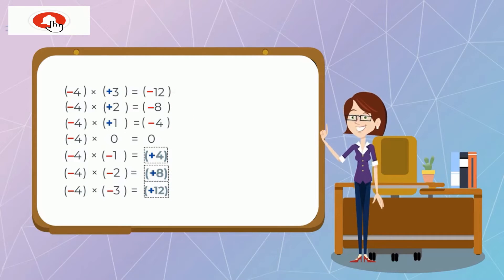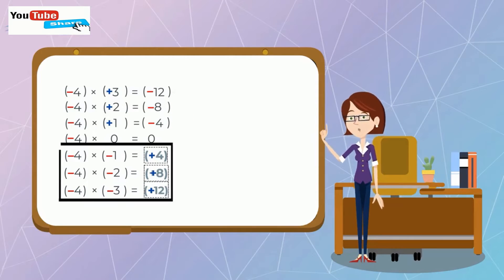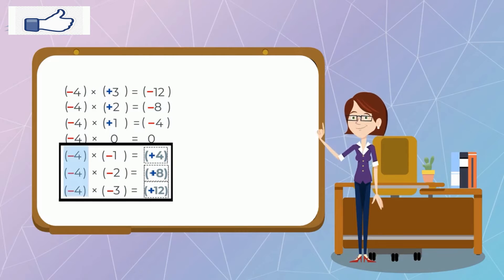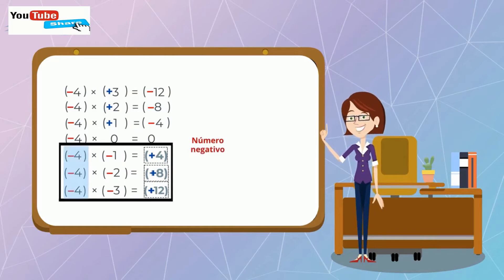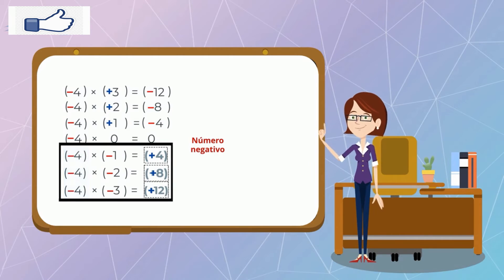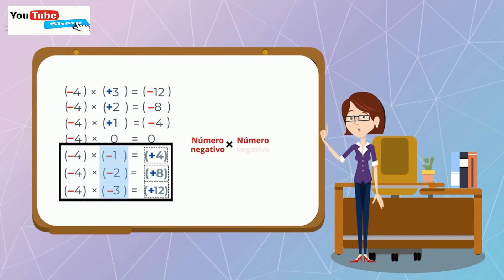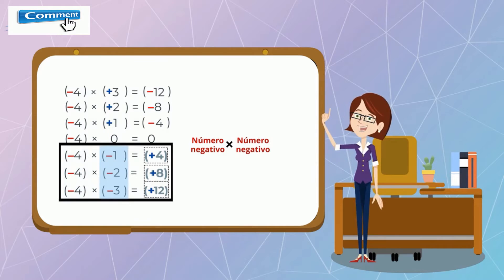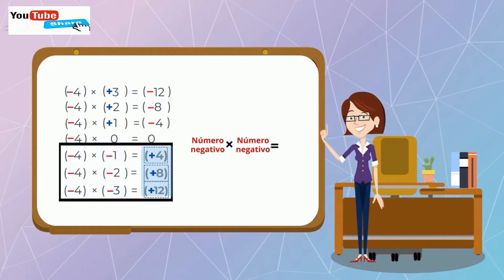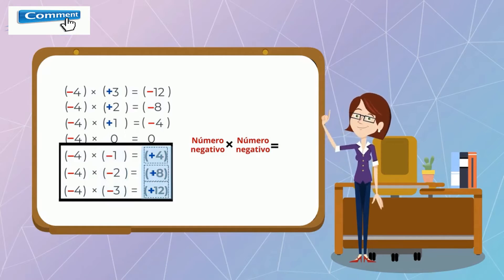Si observamos las últimas 3 multiplicaciones, se trata de la multiplicación de un número negativo por un número negativo, donde el producto, en estos casos, es positivo.